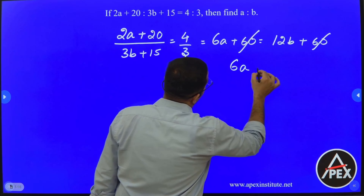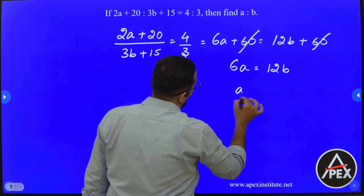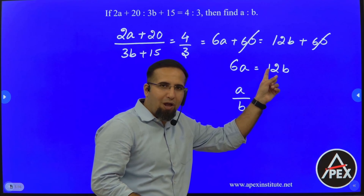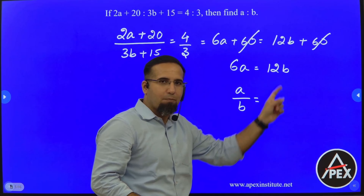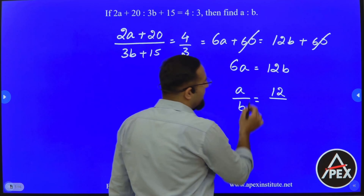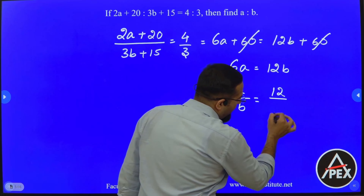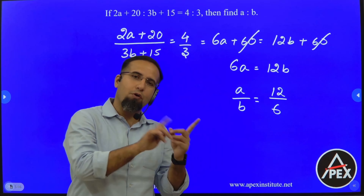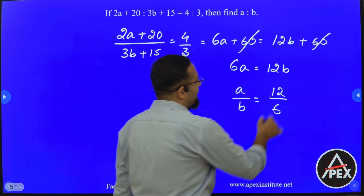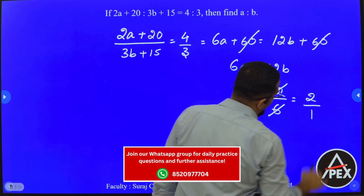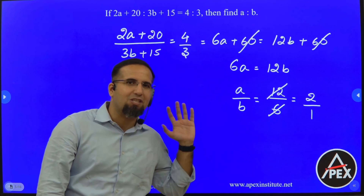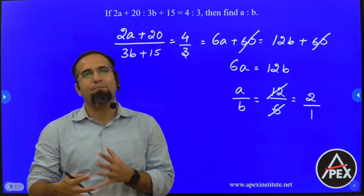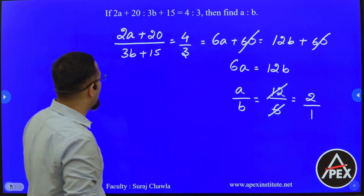Therefore we have 6A equals 12B. From here, the coefficient of B is 12, so cross multiplying, 12 goes to the numerator; A's coefficient is 6, so 6 becomes the denominator. Now 12 by 6 is not in the most simplified form, so cancelling by 6, the final ratio becomes 2 is to 1. Whenever you have equations like this, even in algebra, the easier approach is to convert them into ratios and then proceed.